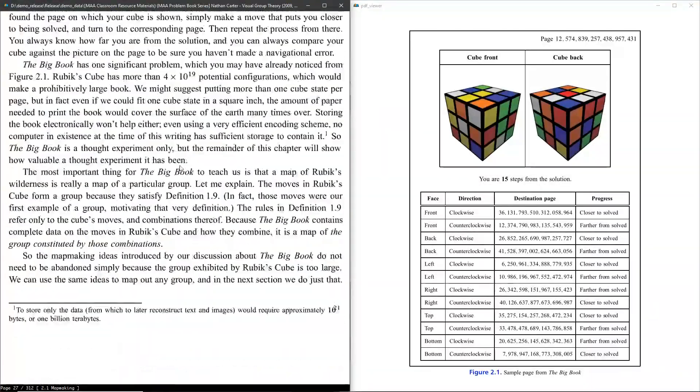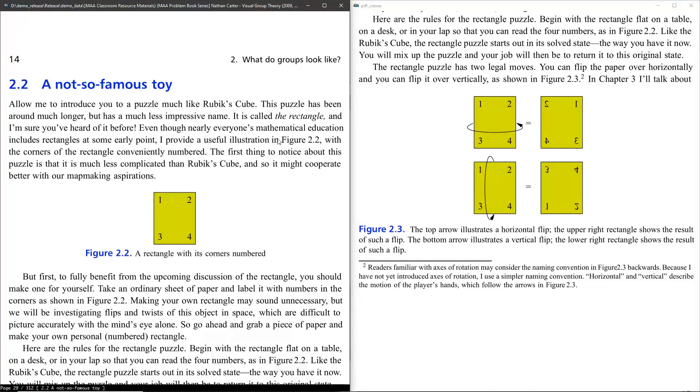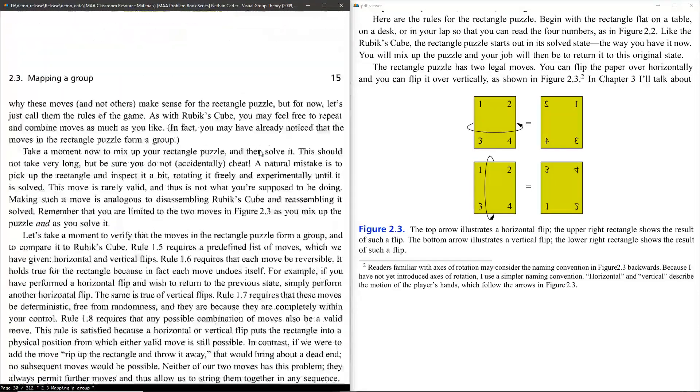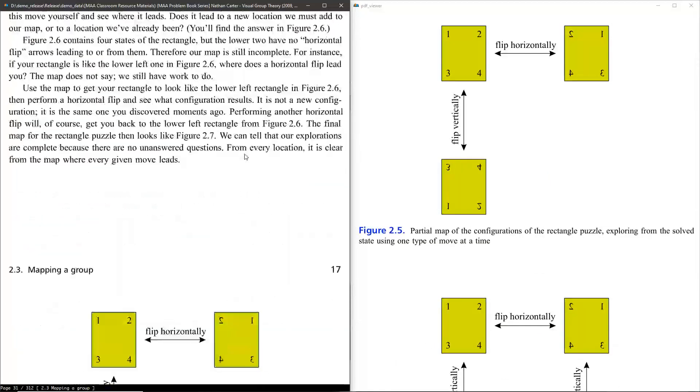With portals, you can automatically display relevant material on a second window, preferably on a second monitor. For example, you can read a paragraph on the main window and display a figure referenced by the paragraph on the helper window.